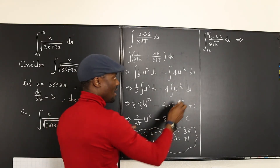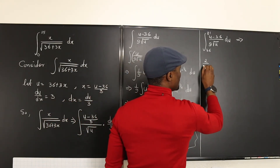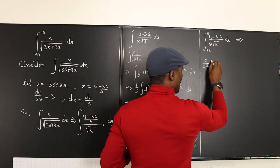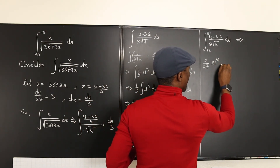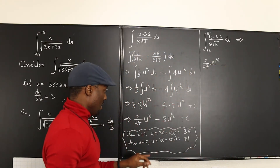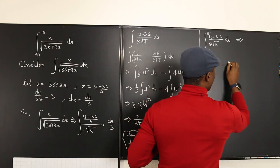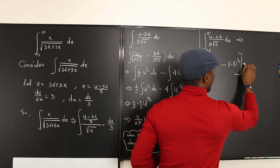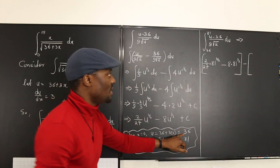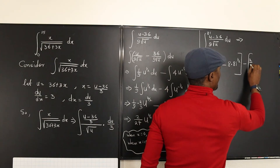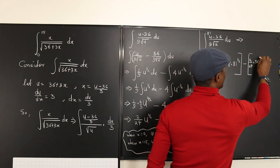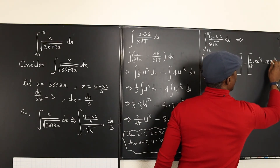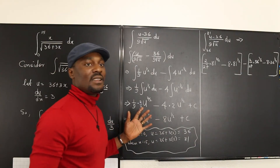We now evaluate 2/27 times u to the 3/2 minus 8 times u to the 1/2, between limits 36 and 81. Starting with the upper boundary (u = 81): we get 2/27 times 81 to the 3/2 minus 8 times 81 to the 1/2. Then subtract the same expression evaluated at the lower boundary (u = 36): 2/27 times 36 to the 3/2 minus 8 times 36 to the 1/2.